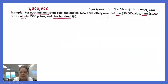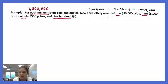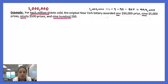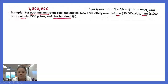For each 1 million tickets sold, the original New York lottery awarded one $50,000 prize, nine $5,000 prizes, 90 $500 prizes, and 900 $50 prizes. So for each 1 million tickets sold, there were 999,000 tickets that didn't win anything.